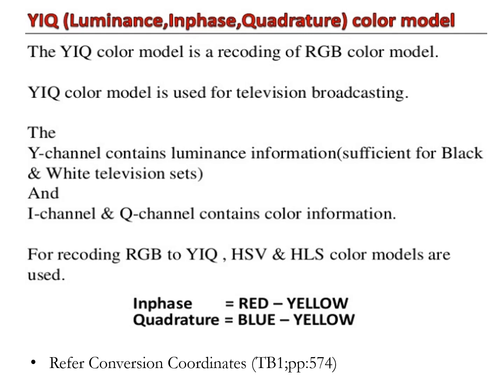This was a requirement in the early days of color television when black and white sets were expected to display originally color pictures. The Y channel contains luminance information sufficient for black and white television sets, while the I and Q channels carry the color information. A color television set would take these three channels YIQ and map the information back to RGB levels for display on the screen, using standard coordinate points to convert RGB to YIQ.